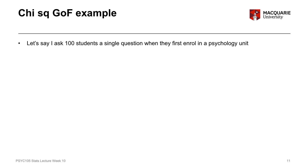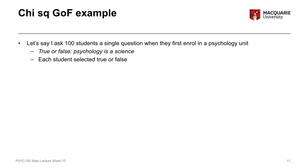Here's our example — a very simplistic one. We have a hundred students and I ask each of those hundred students a question when they first enroll in psychology, before they've ever done any psychology units. I ask them true or false: is psychology a science? Each student selects either true or false, so I have one variable of data — a nominal variable, which is also a dichotomous or binary variable because there are only two outcomes.